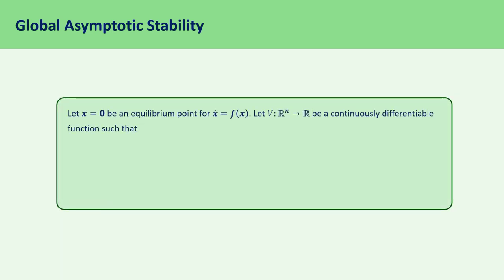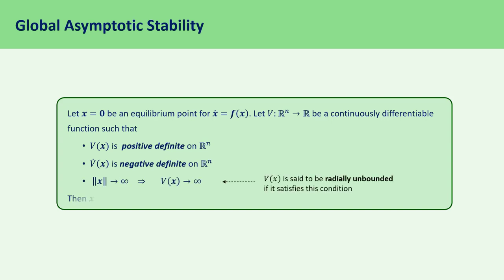We are now ready to state a theorem to determine the global asymptotic stability of an equilibrium point. Assume the origin is an equilibrium point for x_dot = f(x). If there exists a continuously differentiable function V which is positive definite on Rn, such that V_dot is negative definite on Rn, and V is radially unbounded, then the origin is globally asymptotically stable. Note that there are two main differences from the local asymptotic stability theorem: first, V and V_dot must be positive definite and negative definite on the whole space; second, V must be radially unbounded.